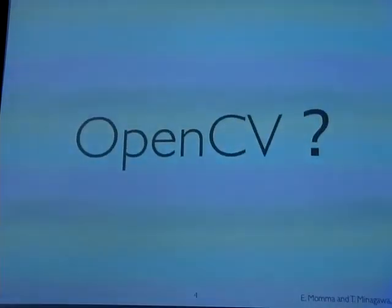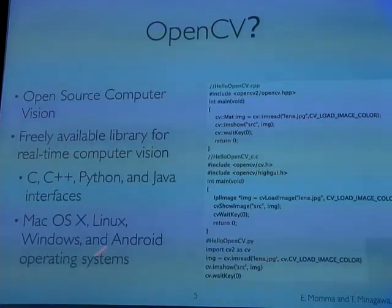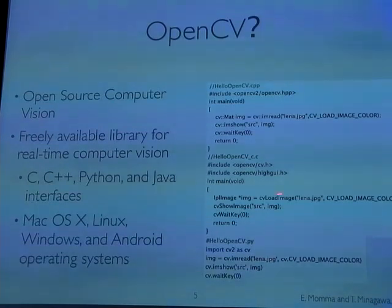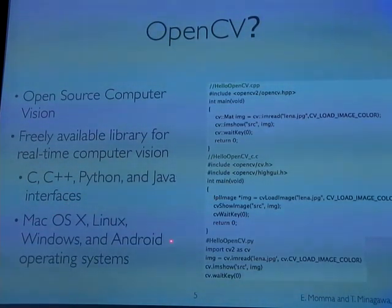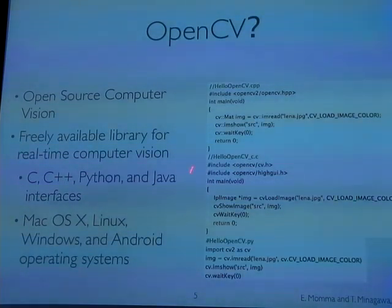Let's move on to introducing OpenCV. OpenSource Computer Vision — OpenCV — is a freely available library for real-time computer vision. It has interfaces for C, C++, Python, and Java, running on Mac OS X, Linux, Windows, and Android operating systems. To start with, we provide a Hello World example in C++, C, and Python.